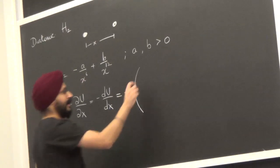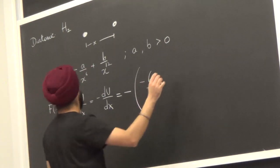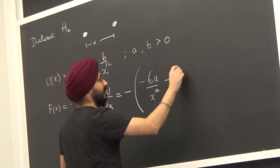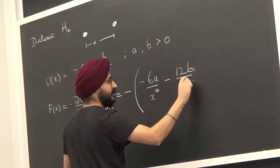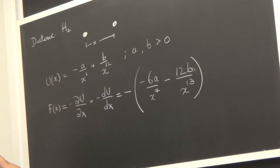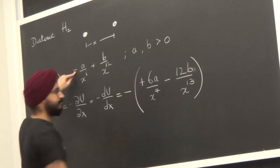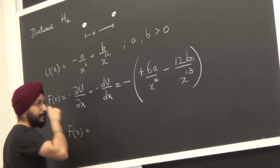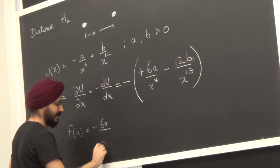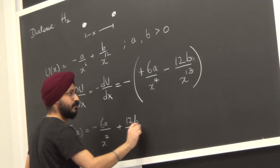Differentiating: x⁻⁶ gives -6a/x⁷ for the first term, and the second term gives 12b/x¹³. So the force F(x) = -6a/x⁷ + 12b/x¹³.